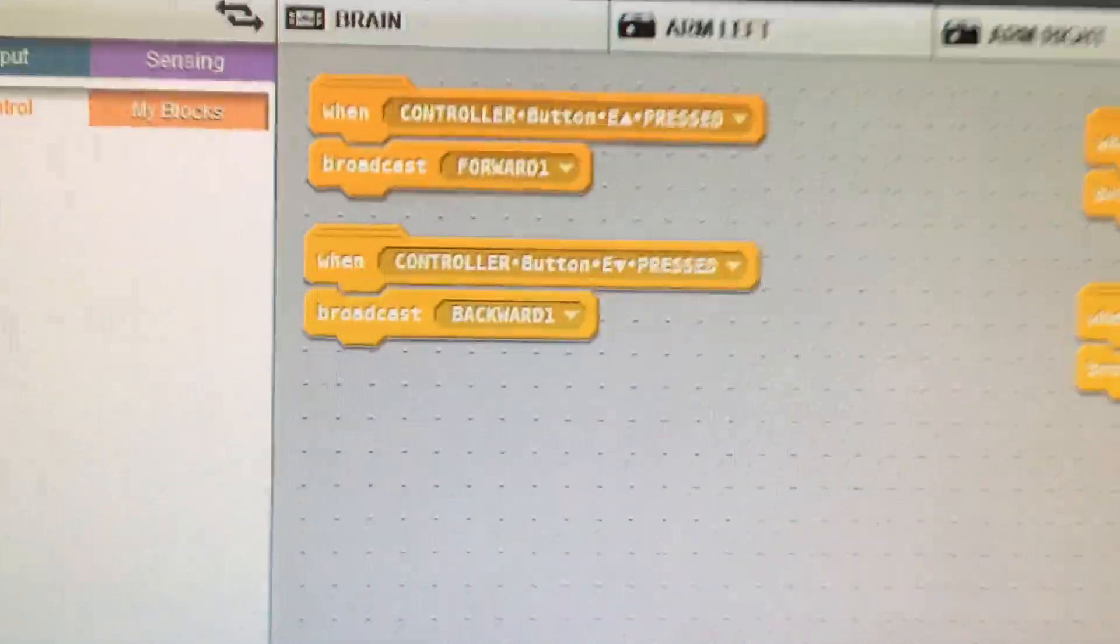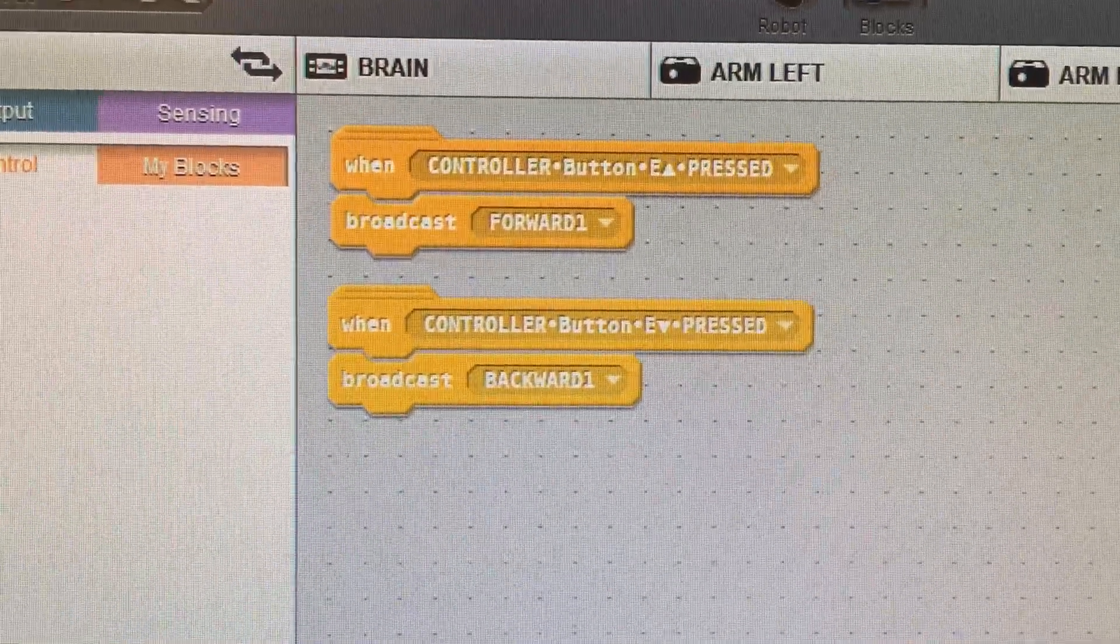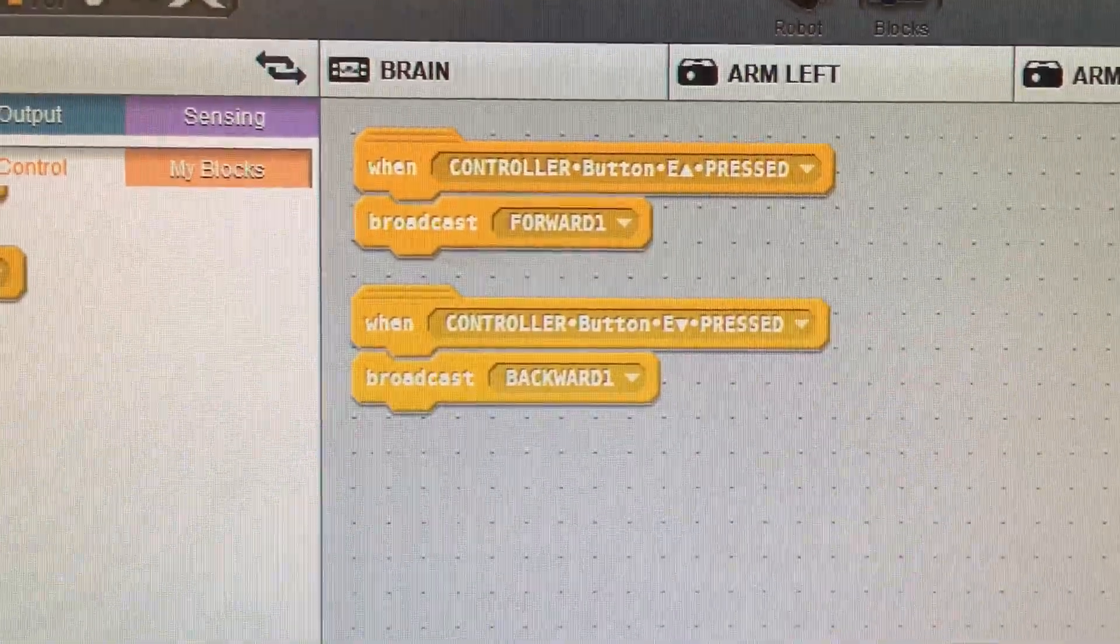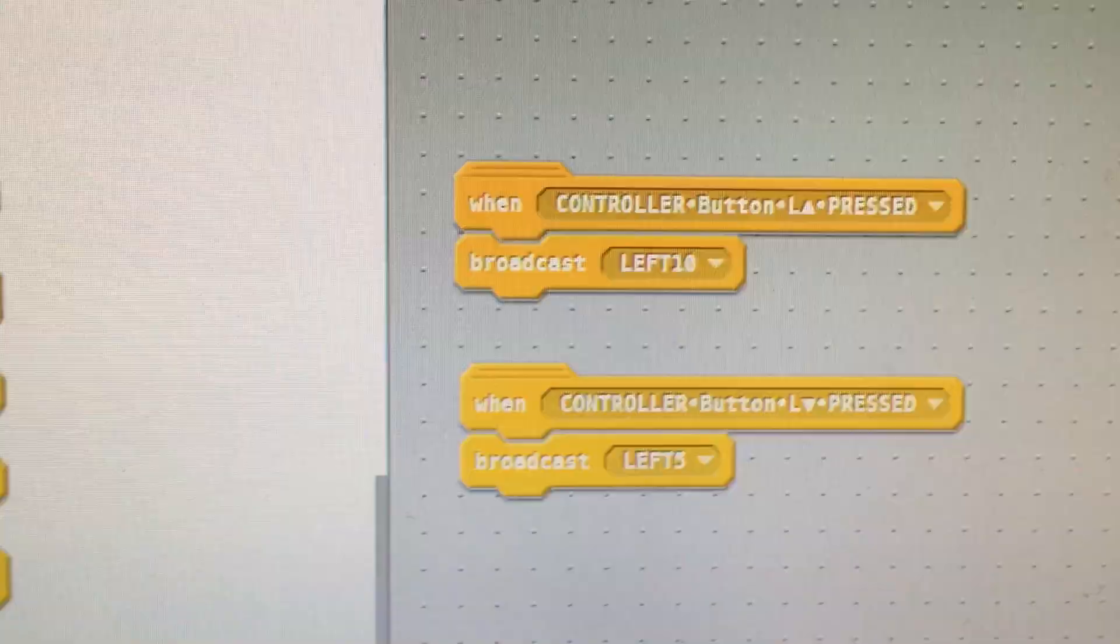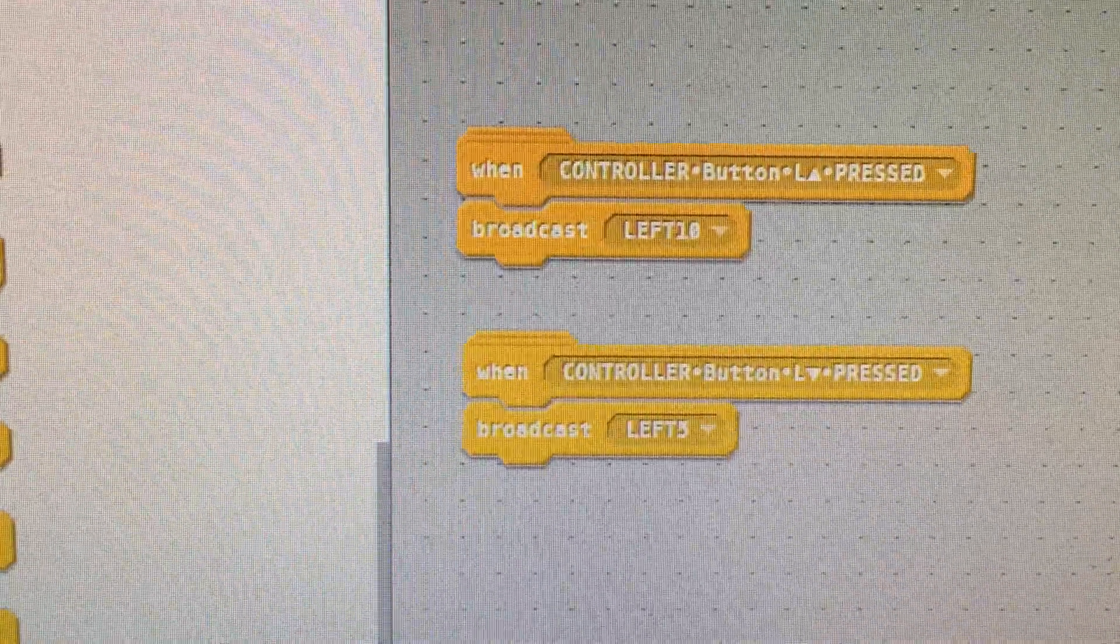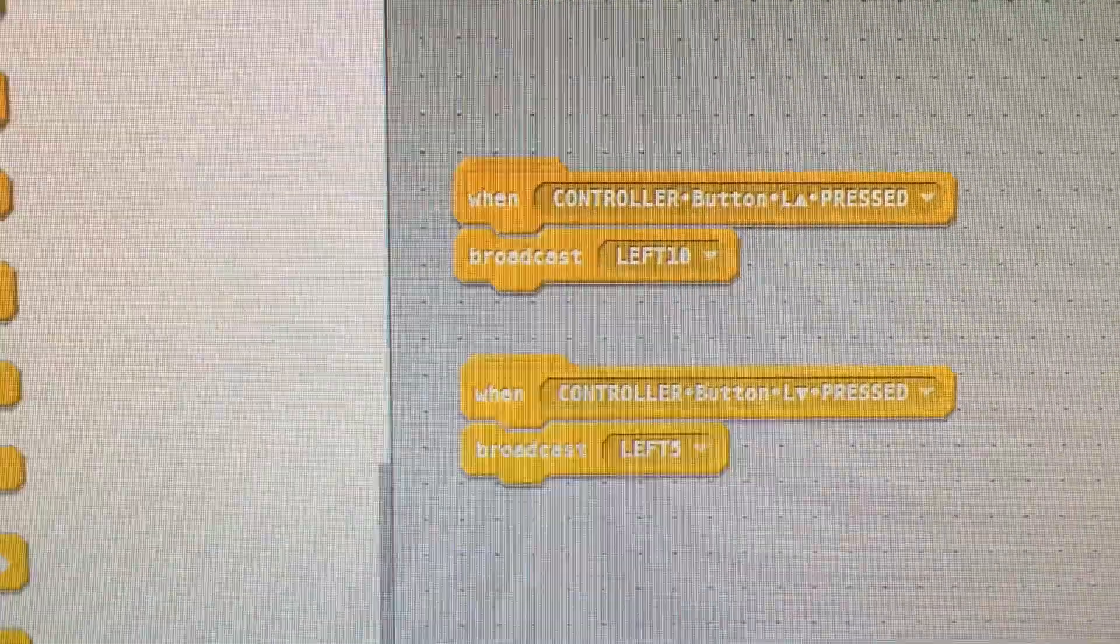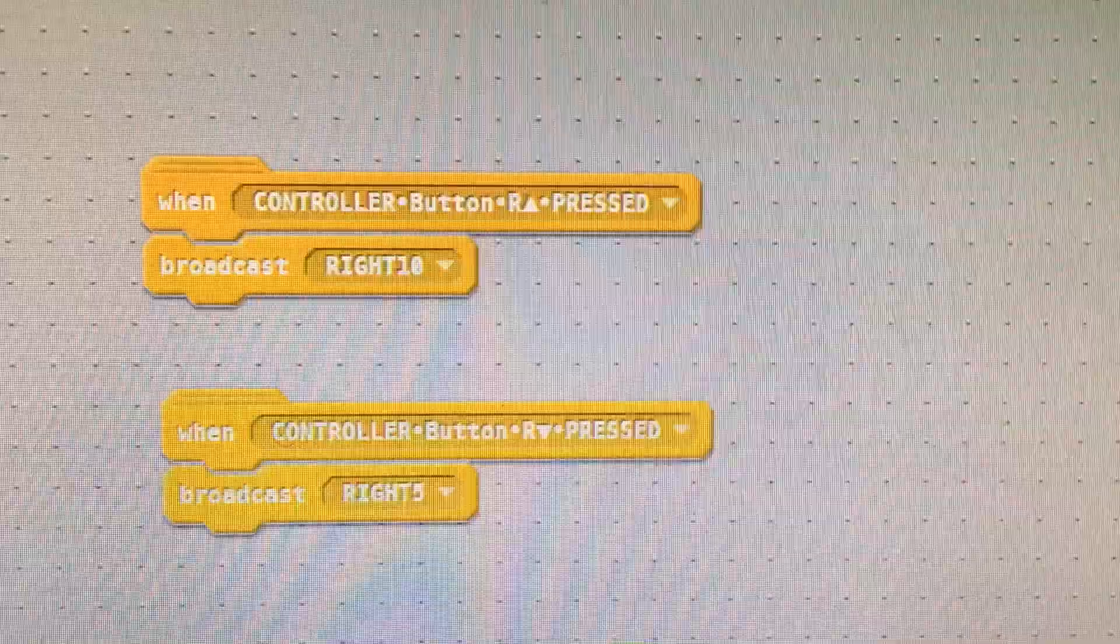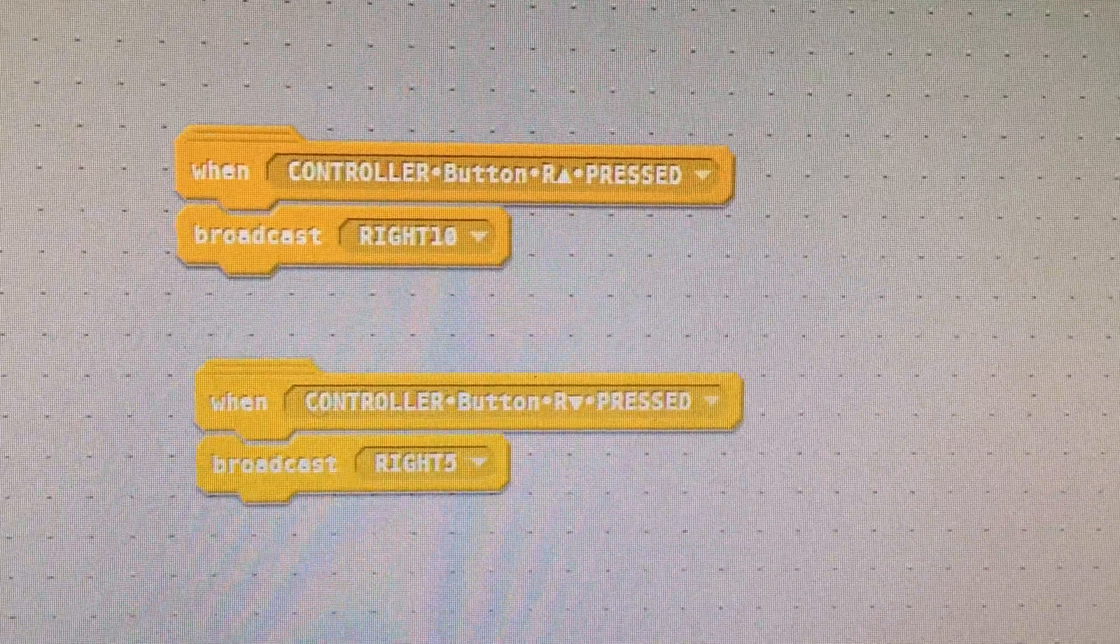All right, we're going to zoom into these spots here. We said if controller button E up is pressed or E down is pressed, broadcast forward one or backward one. What that does is moves the robot forward one inch or backwards one inch. Button L up pressed or button L down pressed broadcasts left 10 or left 5, which turns the robot 10 degrees to the left or 5 degrees to the left. Button R up pressed or down pressed is the same thing except for the right side.